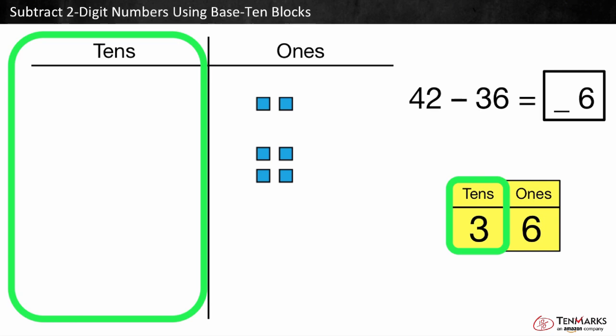What is the difference? There are zero 10s and six 1s left. 42 minus 36 equals 6.